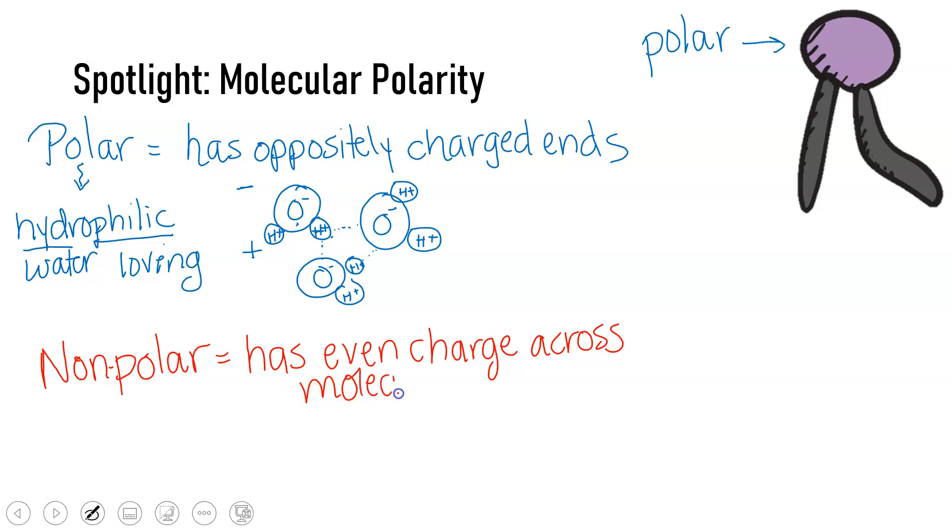These are like siblings that can actually share the blankets with each other. Even blanket distribution. In a nonpolar molecule, you have even electron distribution. Something like a fat doesn't have different kinds of molecules all over the place, so no one's hogging the electrons. They're all sharing well.